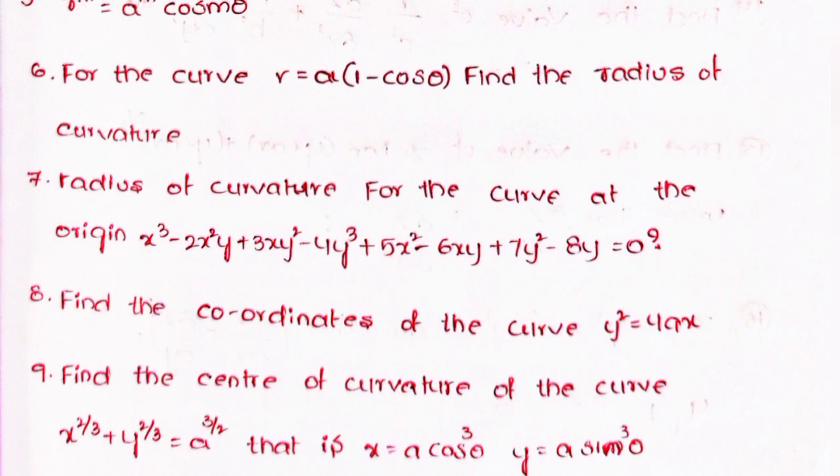Seventh, find the radius of curvature at the origin for the curve x³ − 2x²y + 3xy² − 4y³ + 5x² − 6xy + 7y² − 8y = 0. Eighth, find the coordinates of the center of curvature of the curve y² = 4ax. Ninth, find the center of curvature of x^(2/3) + y^(2/3) = a^(2/3), that is x = a·cos³θ, y = a·sin³θ.